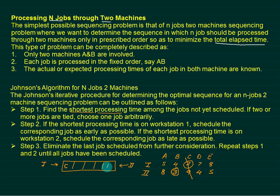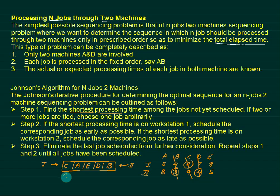After cancelling job B, the remaining jobs have times five, seven, eight, four, and five. The minimum time is four, which belongs to machine two, so job D is entered from the late side. Cancel D. Now we have eight and five remaining. The minimum time is five and five — a tie — so alphabetically we place job A first and job E next. Both resulting sequences give the same total time and performance parameters: one valid sequence is C, A, E, D, B.